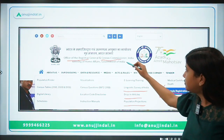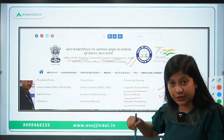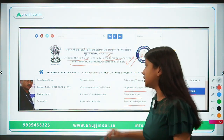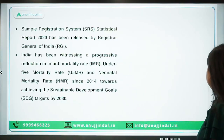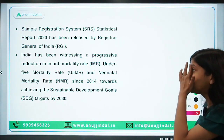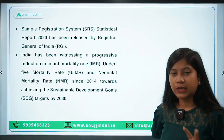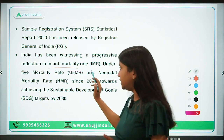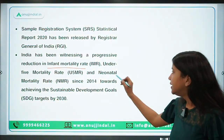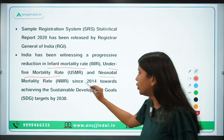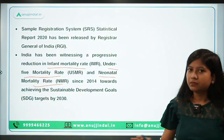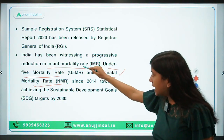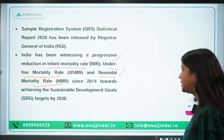This organization comes under the Ministry of Home Affairs. As far as this report is concerned, it talks about the mortality rate among children and has undertaken three parameters: infant mortality rate, under-five mortality rate, and neonatal mortality rate. All of these relate to newborn children, infant children, and under-five children. Let's discuss the data.